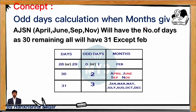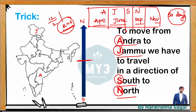For odd days calculation for given months: April, June, September, and November will have a total number of odd days of 2. All remaining months will have 3 odd days, except February. Remember this to solve odd days problems for months.